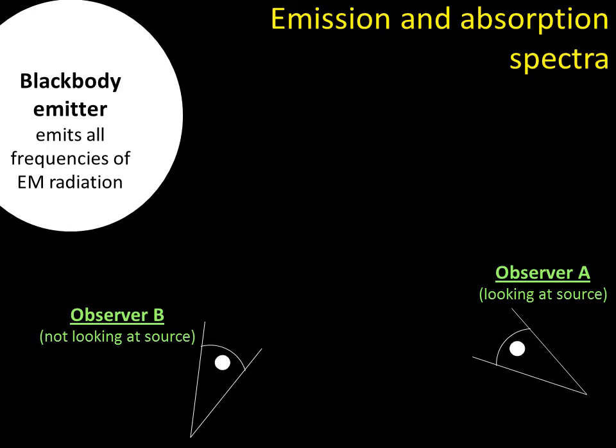If I've got Observer A and Observer B, Observer A is looking directly at that blackbody emitter, and Observer B is not looking at it at all, can't see it, he's looking out into space, so he's not looking at the source. Well, what do they see? And those triangles with the dots indicate eyes.